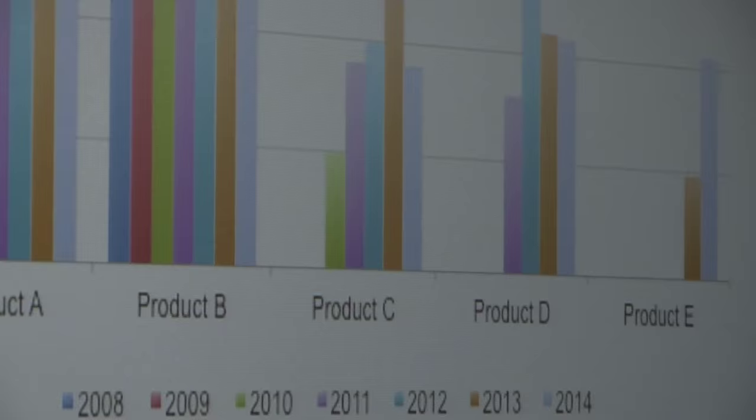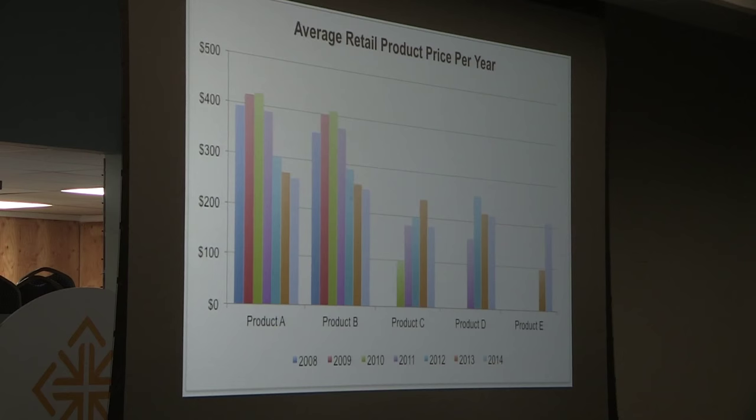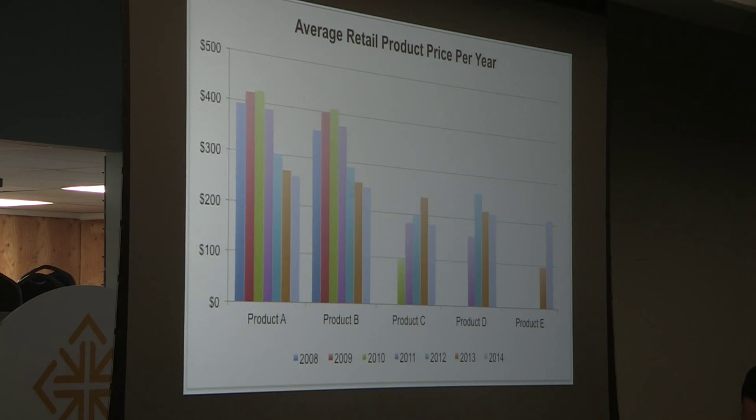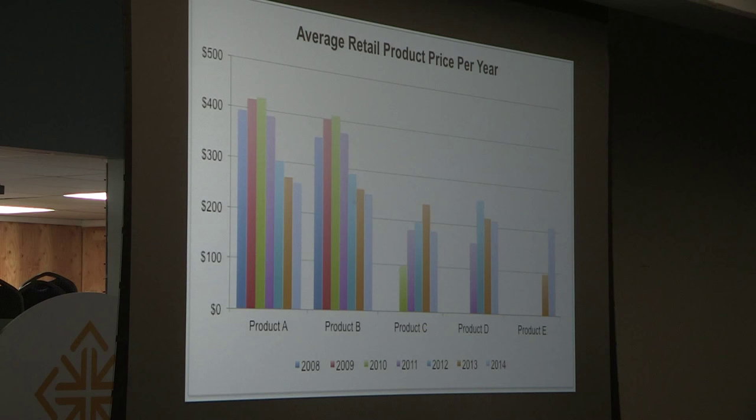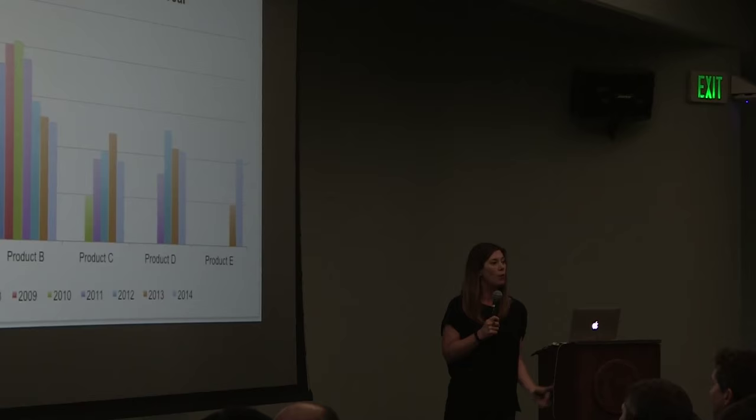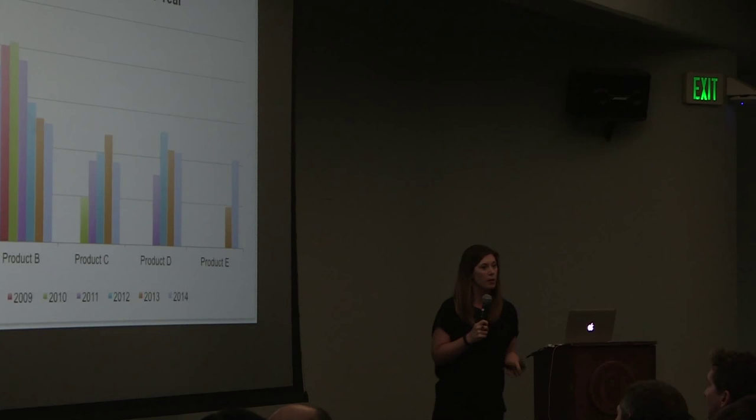Consider a graph that looks something like this — a poor example of data visualization. There is a story here, but my graphing application, Excel in this case, doesn't know what that story is. That's where it takes me as the analyst or the communicator of the information to make that story so visually clear to my audience that they can't help but understand it — that they can't help but see what I want them to see and walk away with the message I want them to know.